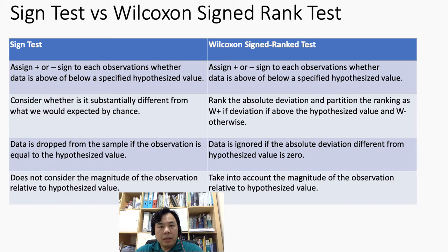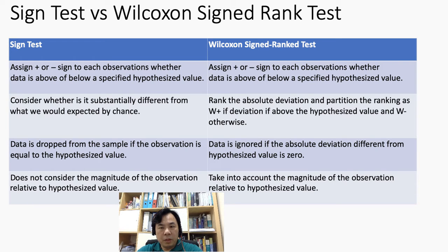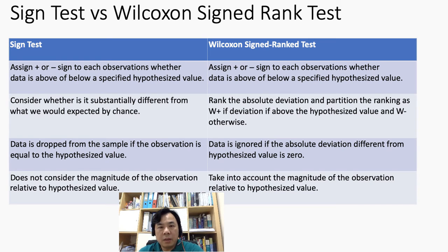For the sign test, data is dropped from the sample if the observation is equal to the hypothesized value. For the Wilcoxon signed rank test, data is ignored if the absolute deviation is equal to zero — meaning if the difference between the observed data and the hypothesized value is zero, we ignore that data point. Both the sign test and Wilcoxon signed rank test share this similarity.